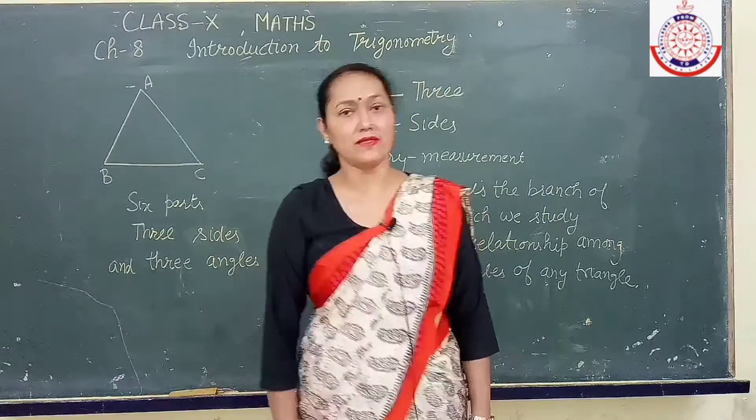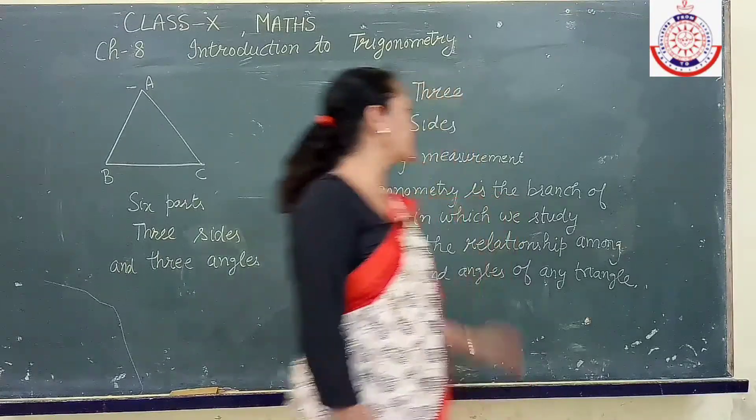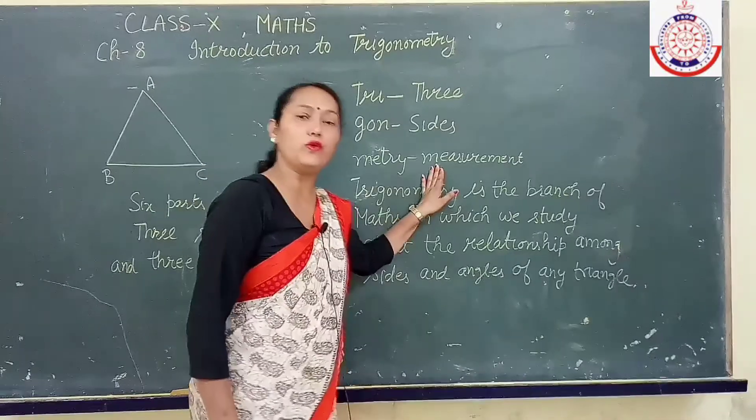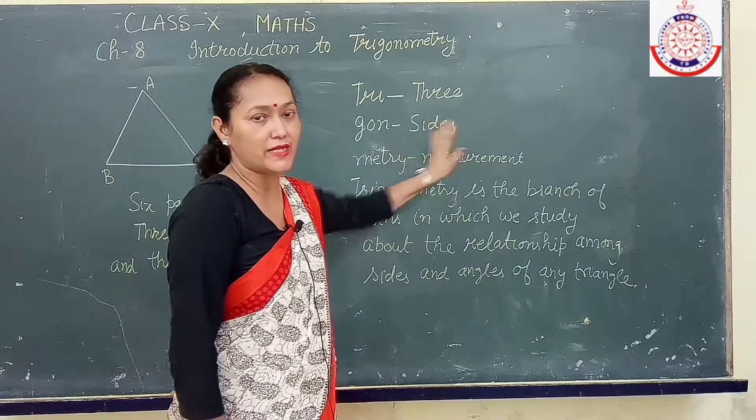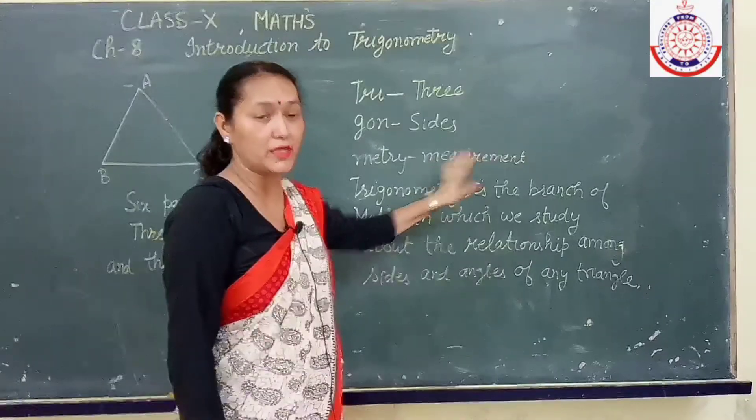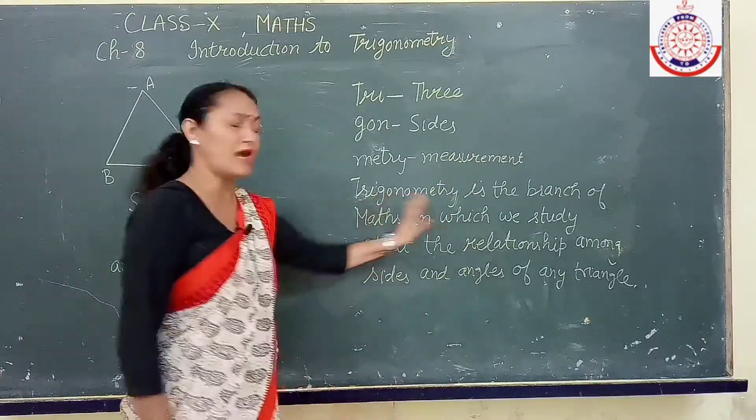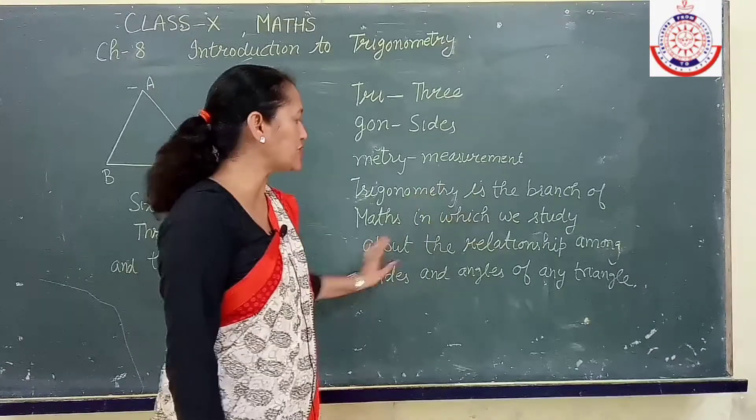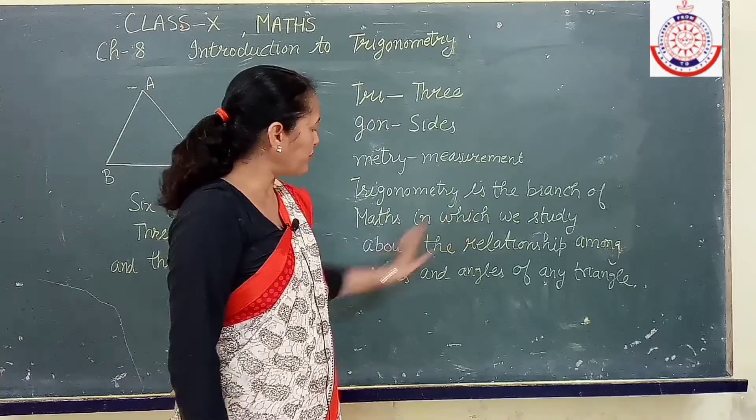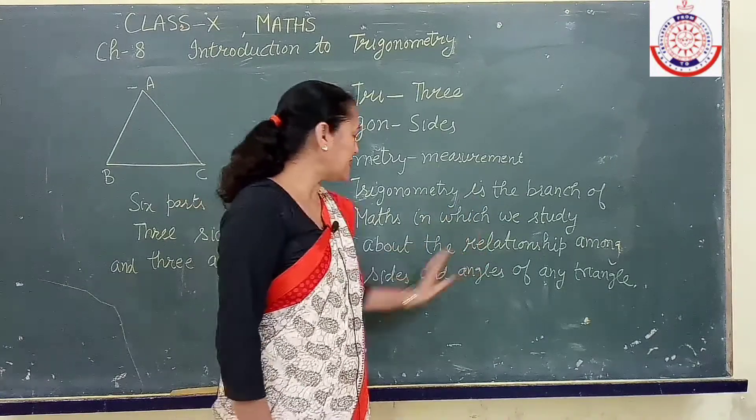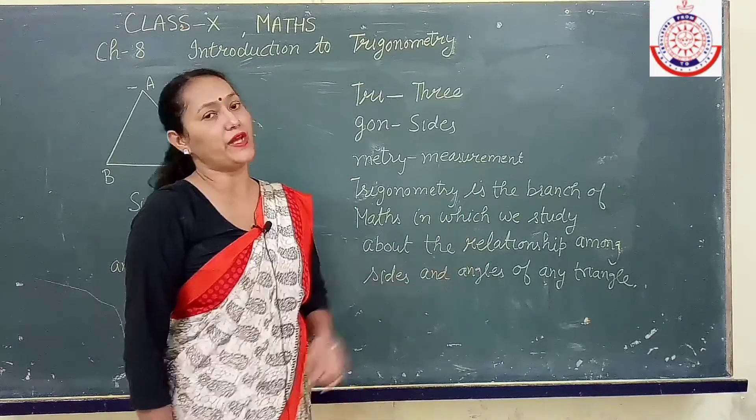For getting all these answers, you will have to study trigonometry. If we go on the word meaning of trigonometry, tri means three, gon means sides and metry means measurement. So trigonometry is that branch of maths which deals with the study of the relationship between sides and angles of any triangle.